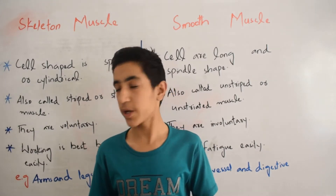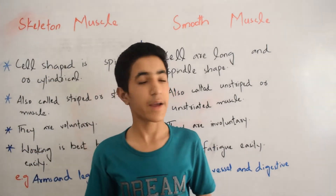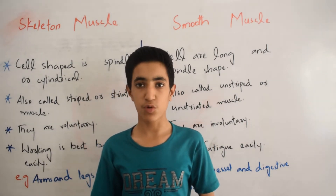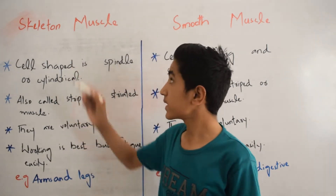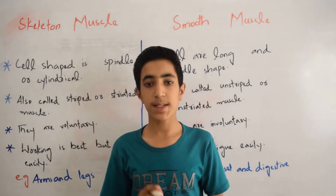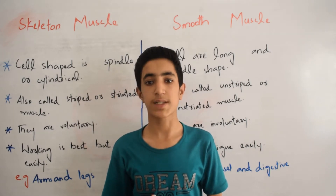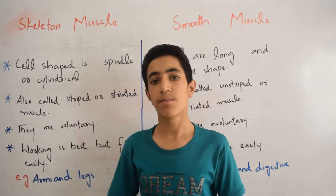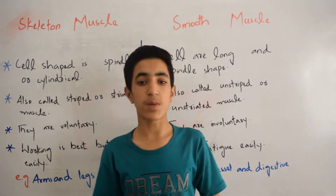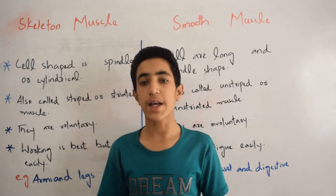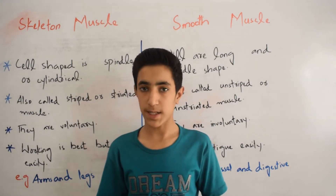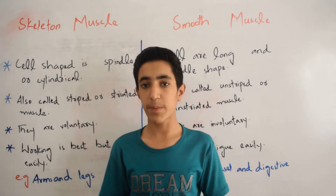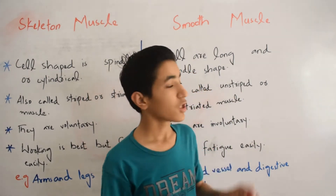Let's talk about the difference between skeletal muscle and smooth muscle. First of all, what is skeletal muscle? Muscles that are attached to the skeleton and associated with the movement of bones are called skeletal muscles. While smooth muscle are the earliest-evolved muscle which is present throughout the animal kingdom. Let's come to the differences between skeletal muscle and smooth muscle.